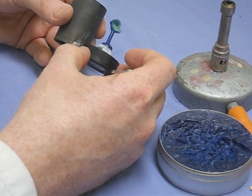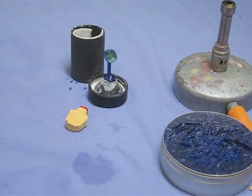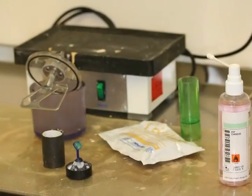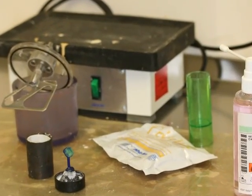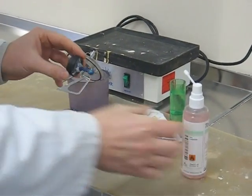So notice the sprue's being mounted sort of straight up and the pattern is at an angle so that as the metal shoots through it will just fill it all in the direction of the casting.